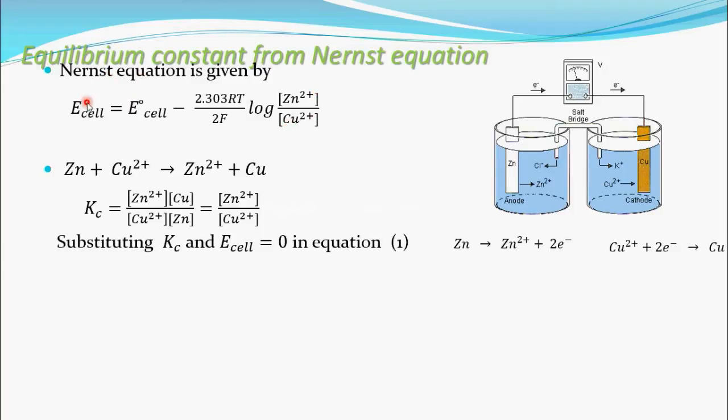In this Nernst equation. So E_cell is 0. E°_cell minus 2.303 RT/2F log K_c. So this is K_c. This is equilibrium constant. So you got from Nernst equation equilibrium constant that is K_c.